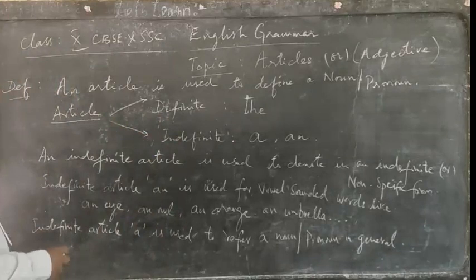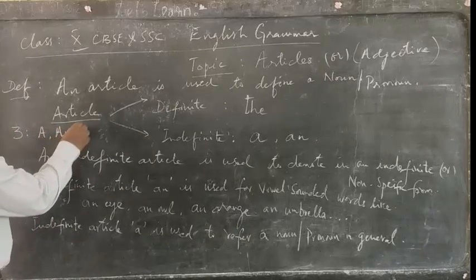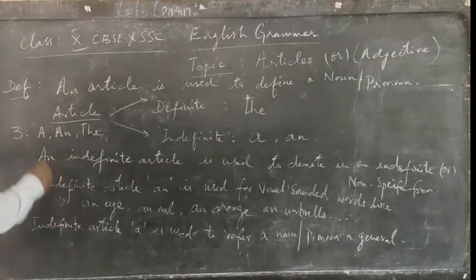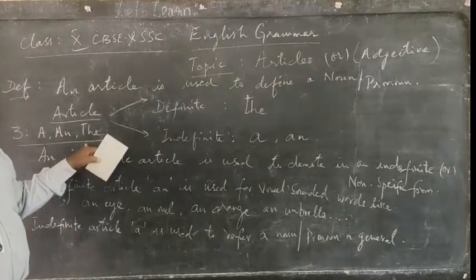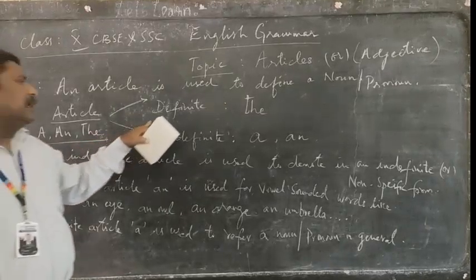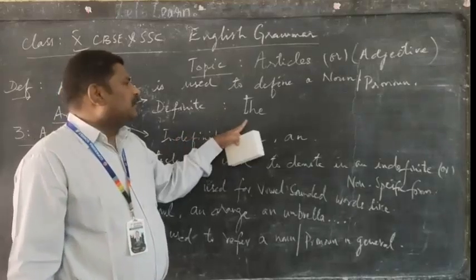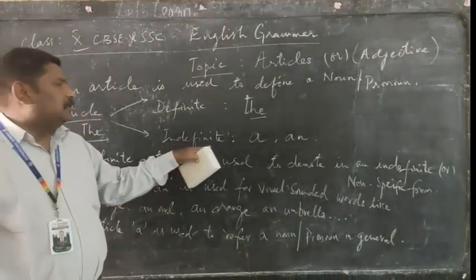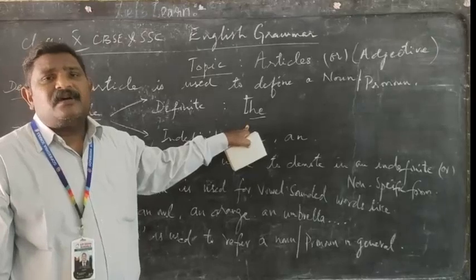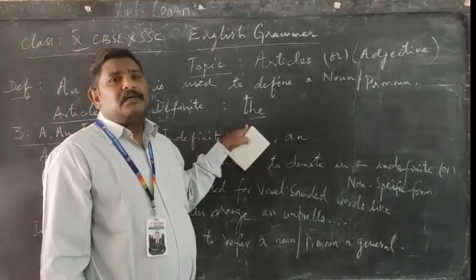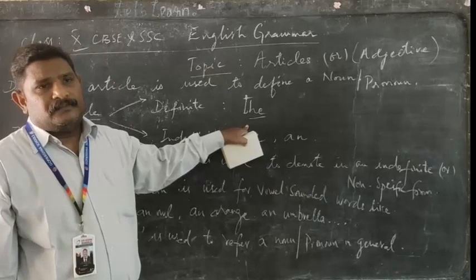How many articles do we have? We have three articles: A, AN, and THE. These are the three articles used in the English language. According to their features, they are divided into definite and indefinite. Under definite article, we have THE. THE denotes the definite or specific article — for example, the table, the bench, the school.